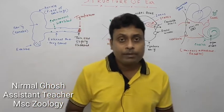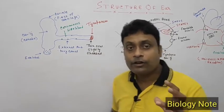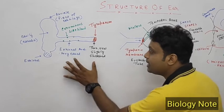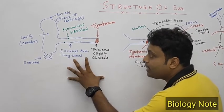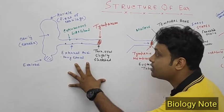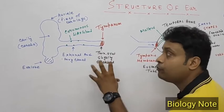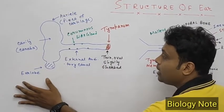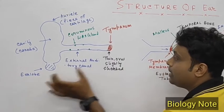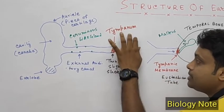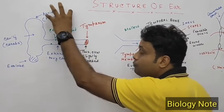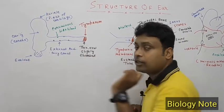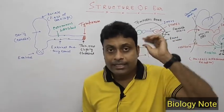To perform this function, the ear contains different parts. The first part is the external ear, and the external ear contains four regions: the auricle, the earlobe, the external auditory canal, and the tympanic membrane.